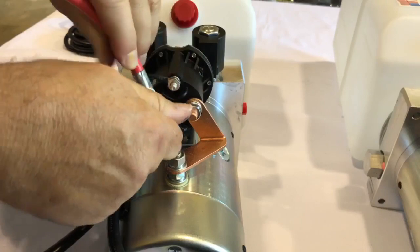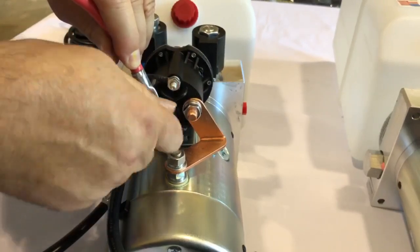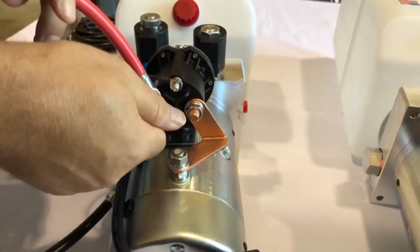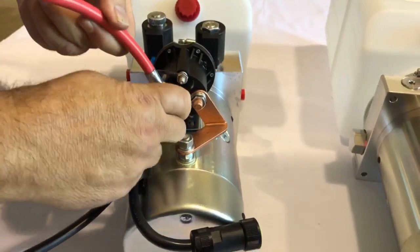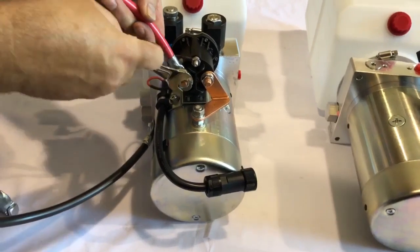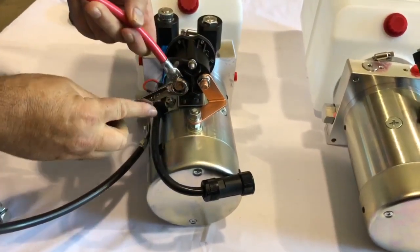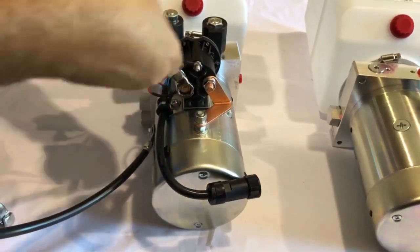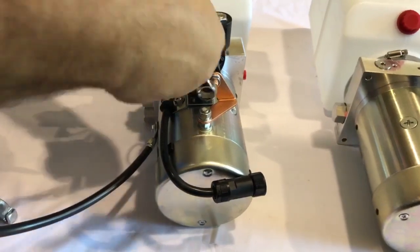Now on the starter solenoid there's a red wire that goes to one of these lugs and that's where you want to hook up the positive battery cable. And I'm using a half inch, but I think also a 13 millimeter might work as well.